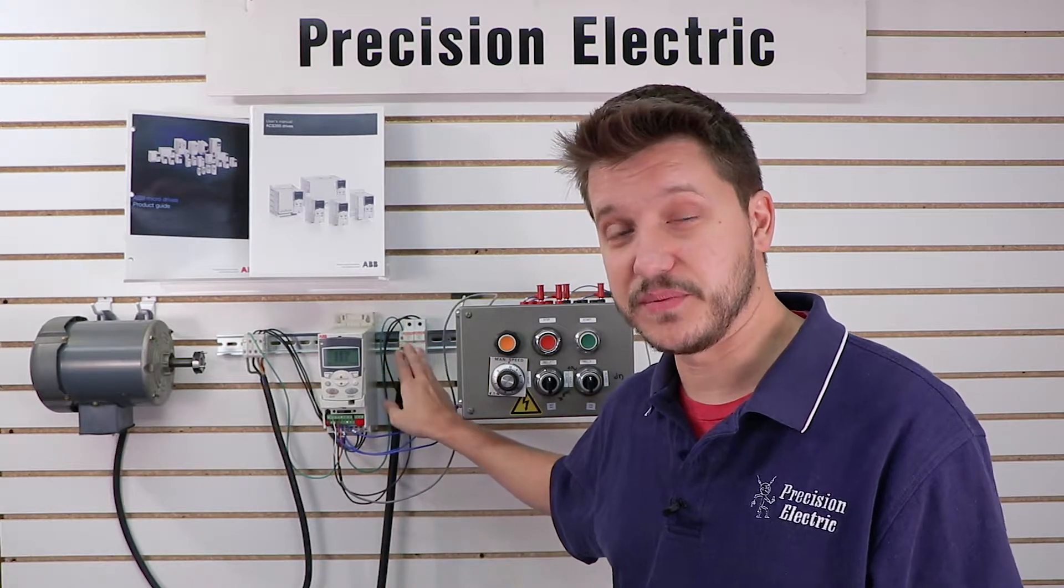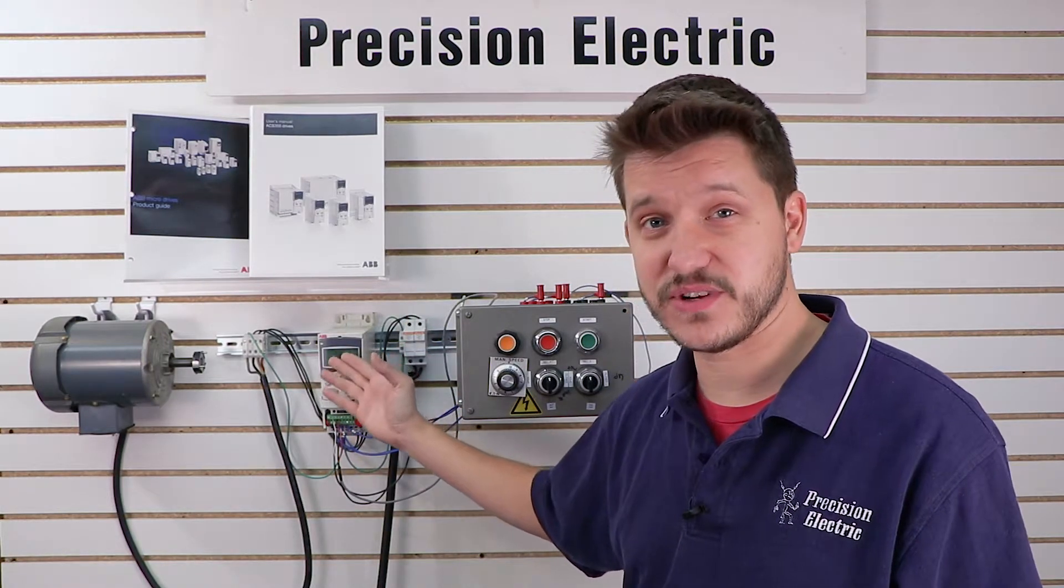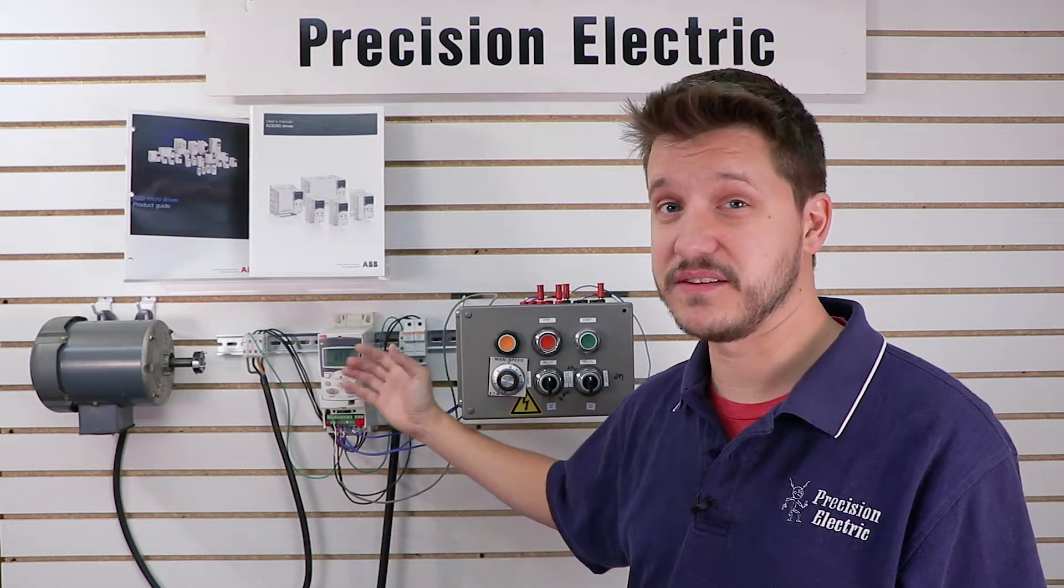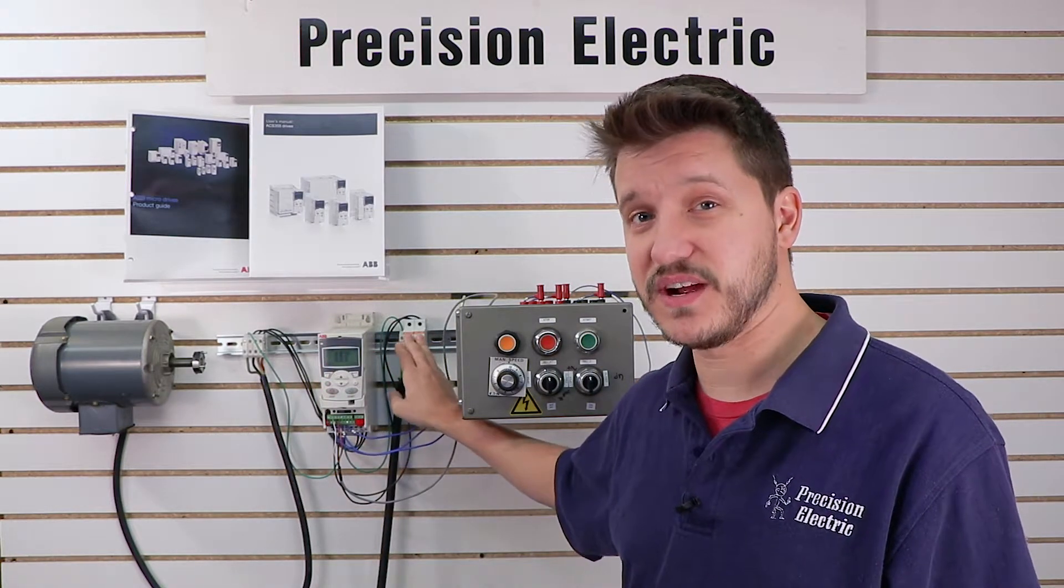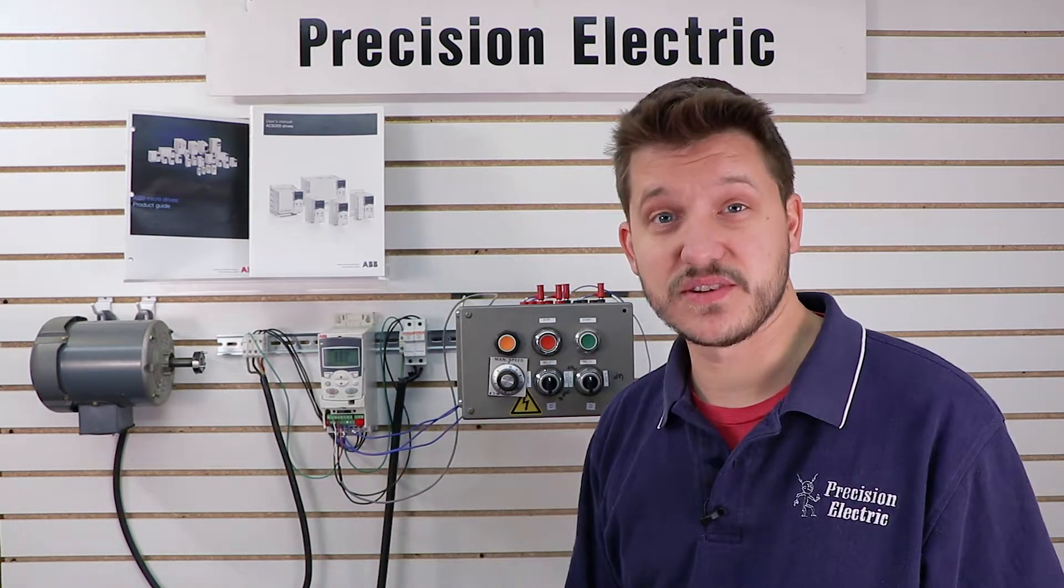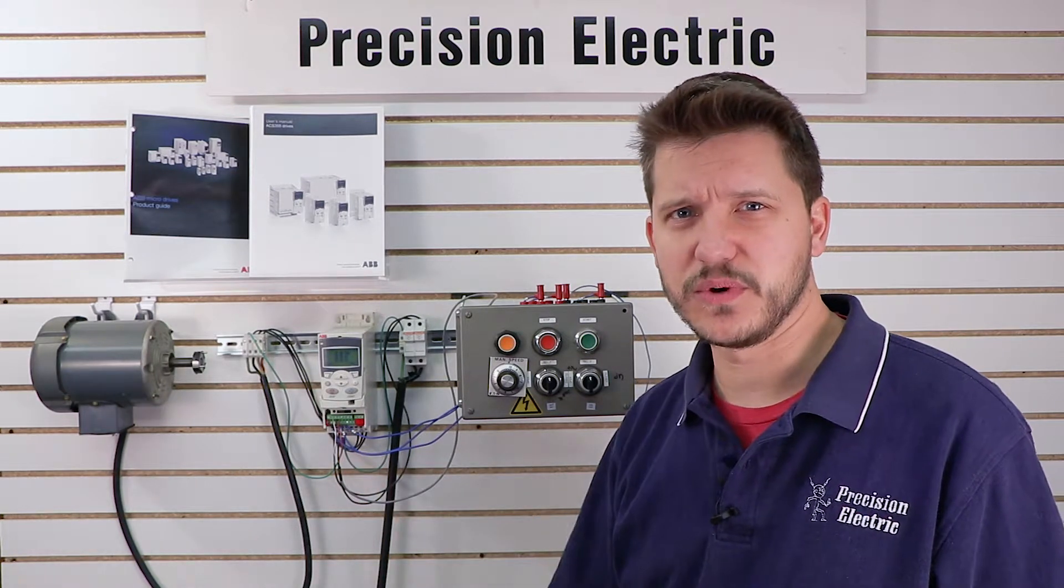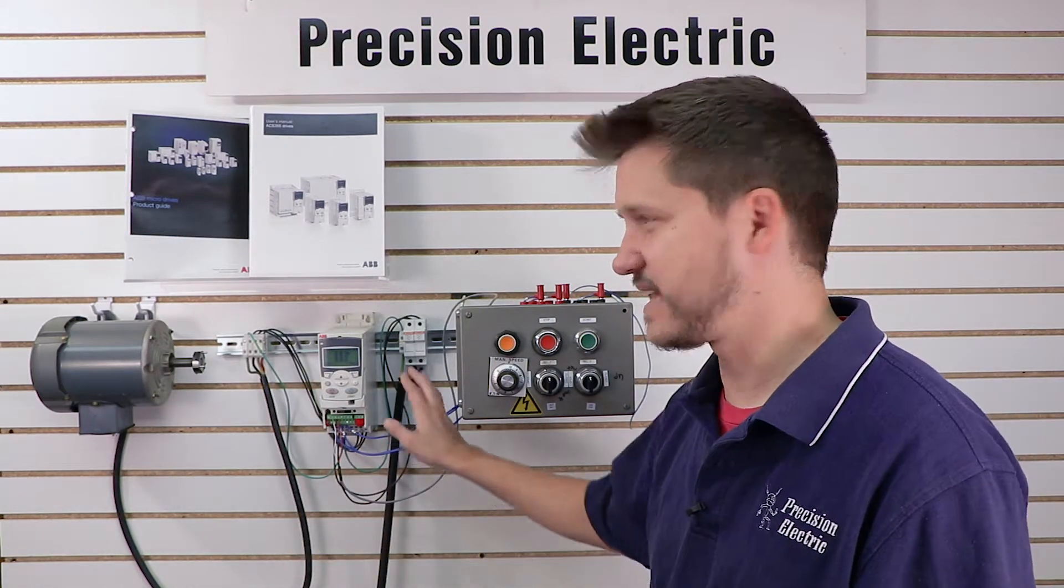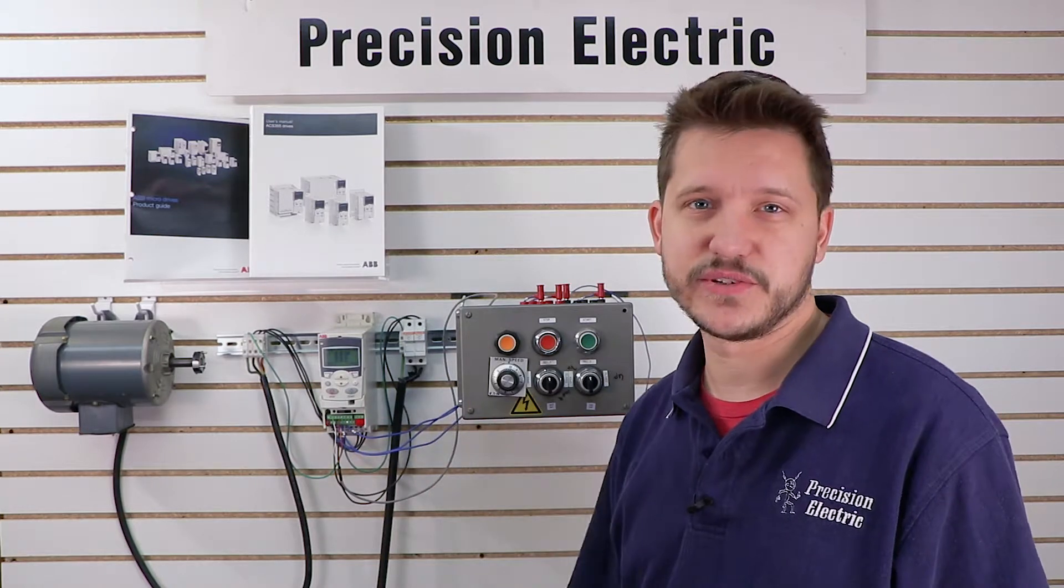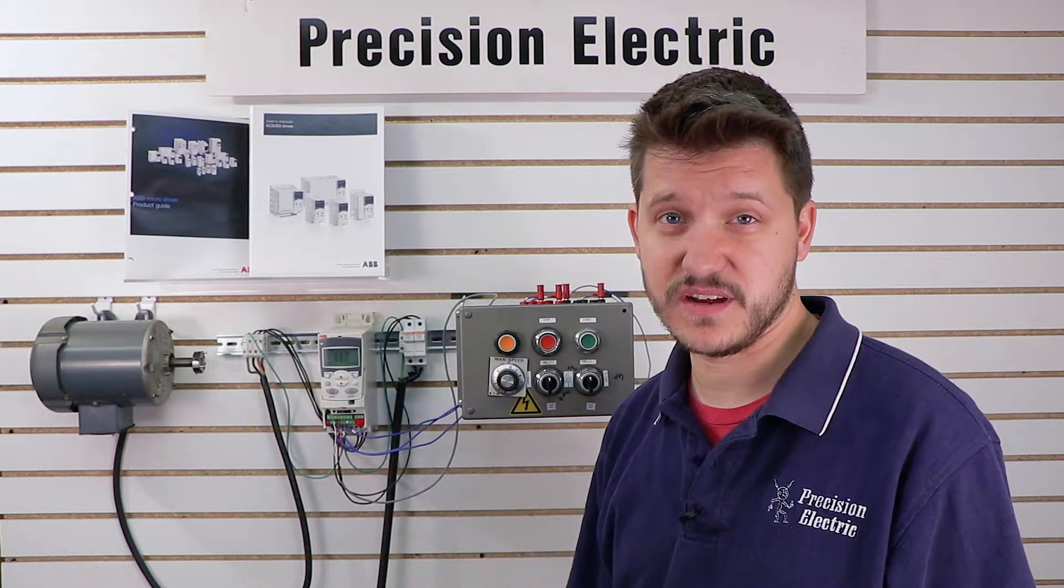We basically tell people it's cheap insurance. You buy a $500, $600 drive or maybe even a $5,000, $10,000 drive. For maybe 5% of the cost of the drive, you can protect the input section without any concerns. And it makes a huge difference. We've had a lot of customers in the field where we'll go out and find out they had a circuit breaker and it just took too long to trip. Blew up not only the breaker, but also blew up the input section of the drive.